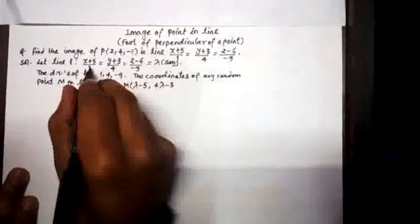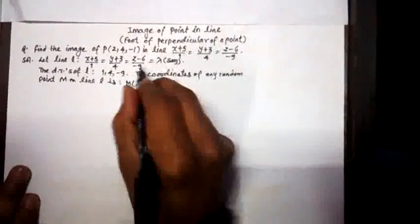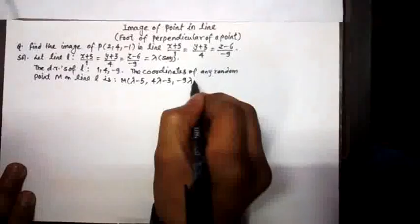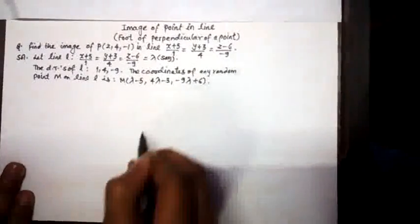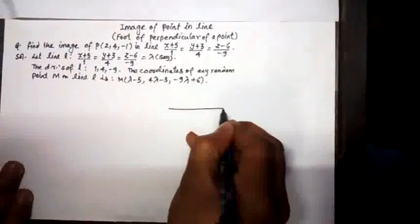x will be equal to λ times 1 minus 5, and 4 times λ minus 3, similarly -9λ and this becomes plus 6. I will elaborate the situation by taking a diagram.